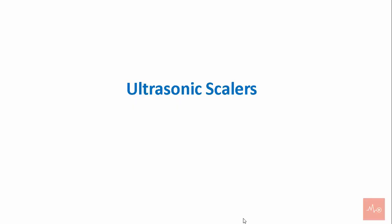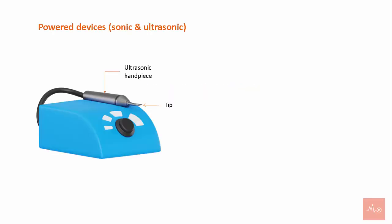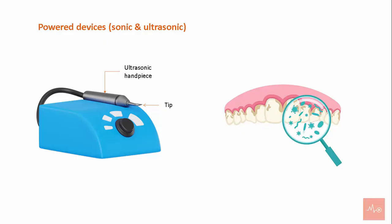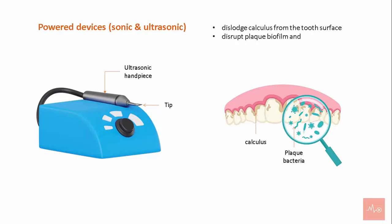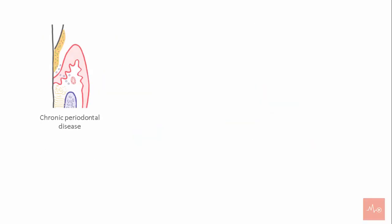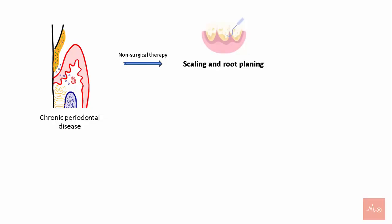Ultrasonic scalers are power devices, like the sonic, designed to dislodge calculus from the tooth surface, disrupt plaque biofilm, and flush out bacteria from the periodontal pocket. Initial treatment of chronic periodontitis involves non-surgical therapy with scaling and root planing. To enhance the outcome of scaling and root planing, sonic and ultrasonic scalers have been developed.